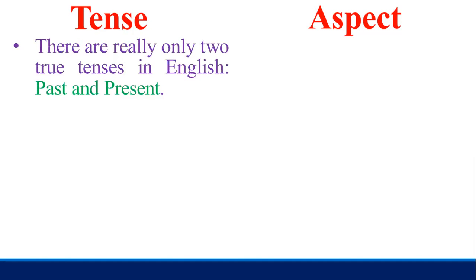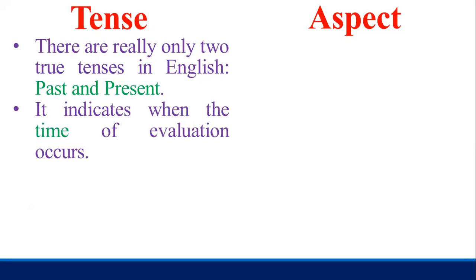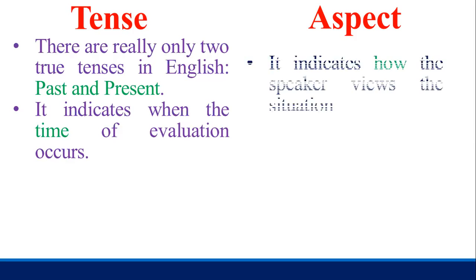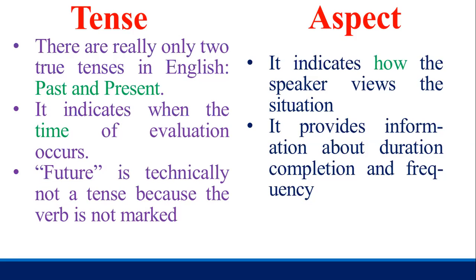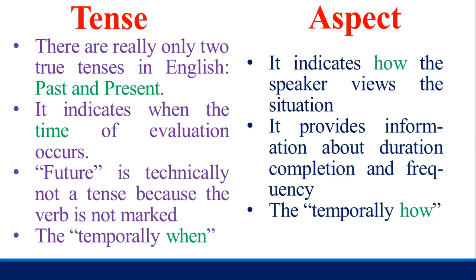There are really only two true tenses in English: past and present. Tense indicates when the time of evaluation occurs. Aspect indicates how the speaker views the situation. The future is technically not a tense because the verb is not marked. Aspect provides information about duration, completion, and frequency. Tense answers 'when' temporally, while aspect answers 'how' — you can easily distinguish the differences between them.